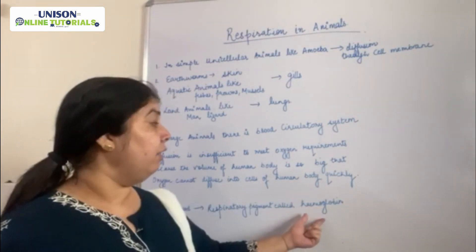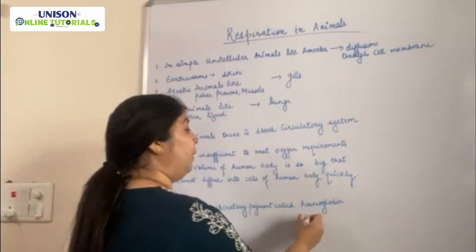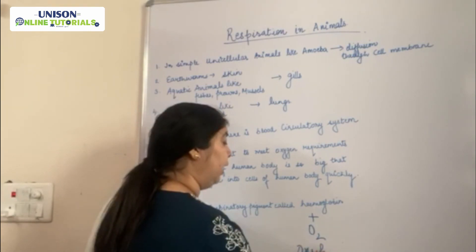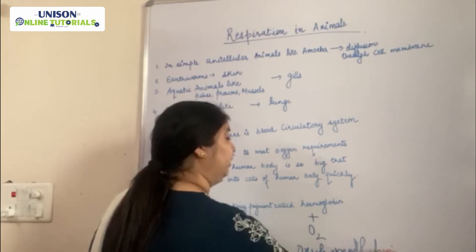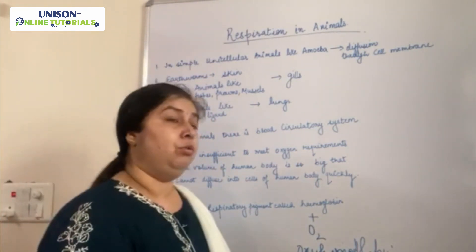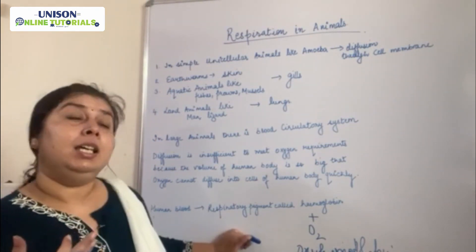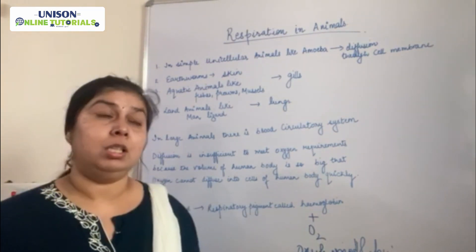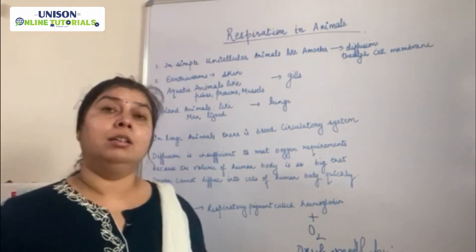In the blood circulatory system, we have a special pigment called hemoglobin. Hemoglobin forms a complex with oxygen to form oxyhemoglobin. Once this complex is formed, it reaches each and every cell of the body. So hemoglobin is very important in the respiratory system of animals.